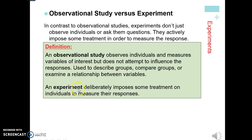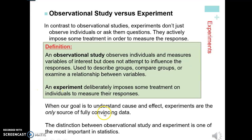An experiment deliberately imposes some sort of treatment on an individual to measure their responses. We tell one person to run three miles, one person to run five miles, and then measure their responses. When our goal is to understand cause and effect, experiments are the only way to do this. With observational studies, you cannot establish cause and effect — you can just say maybe there's an association, but we can't say one caused another. That distinction is one of the most important things in statistics: if it's observational, we can't do cause and effect, but if it's experimental and designed correctly, we potentially can say that one caused another to happen.